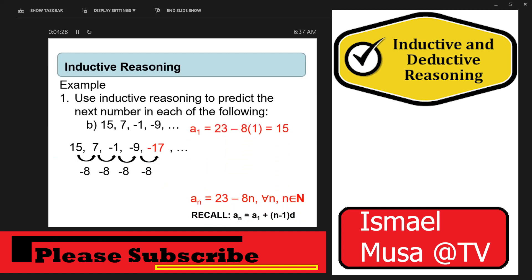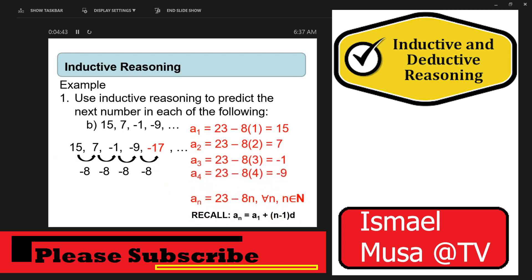Let's verify the conjecture. 23 minus 8 times 1 is 15; 23 minus 8 times 2 is 7; 23 minus 8 times 3 is negative 1; 23 minus 8 times 4 is negative 9; and 23 minus 8 times 5 is negative 17. If you continue doing this, you always get the correct answer in that series.